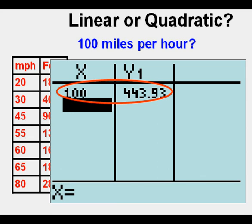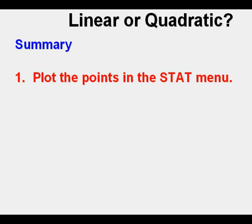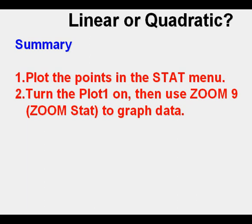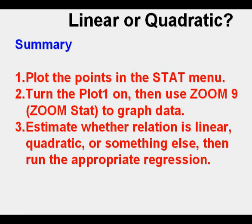So to summarize, first, plot the points in the stat menu. Second, turn the plot one on. Use zoom nine to graph the data. And then estimate whether that relation is linear, quadratic, or something else. Then run the appropriate regression.